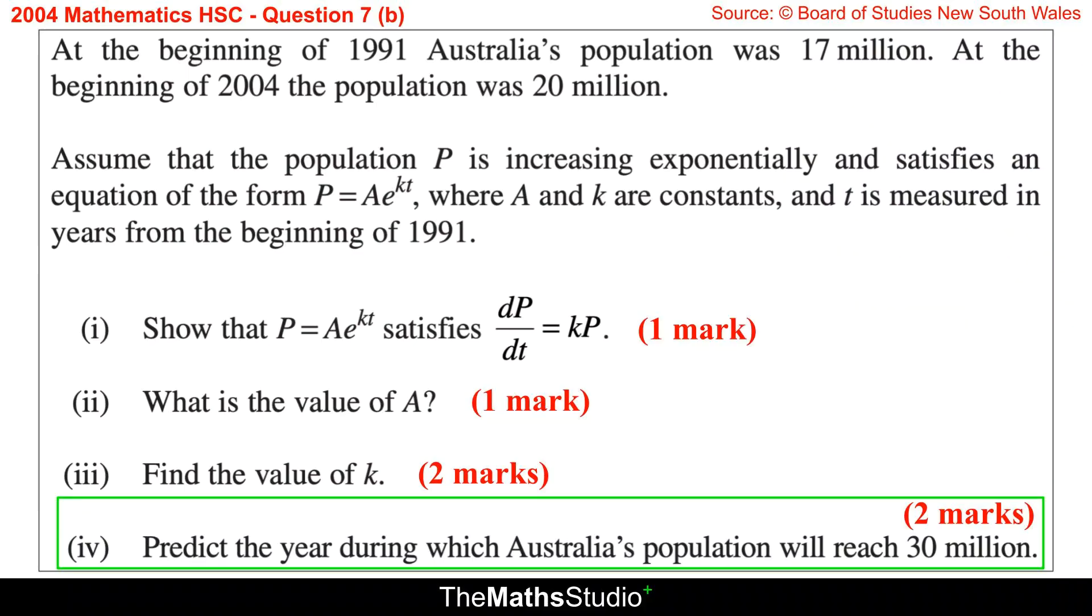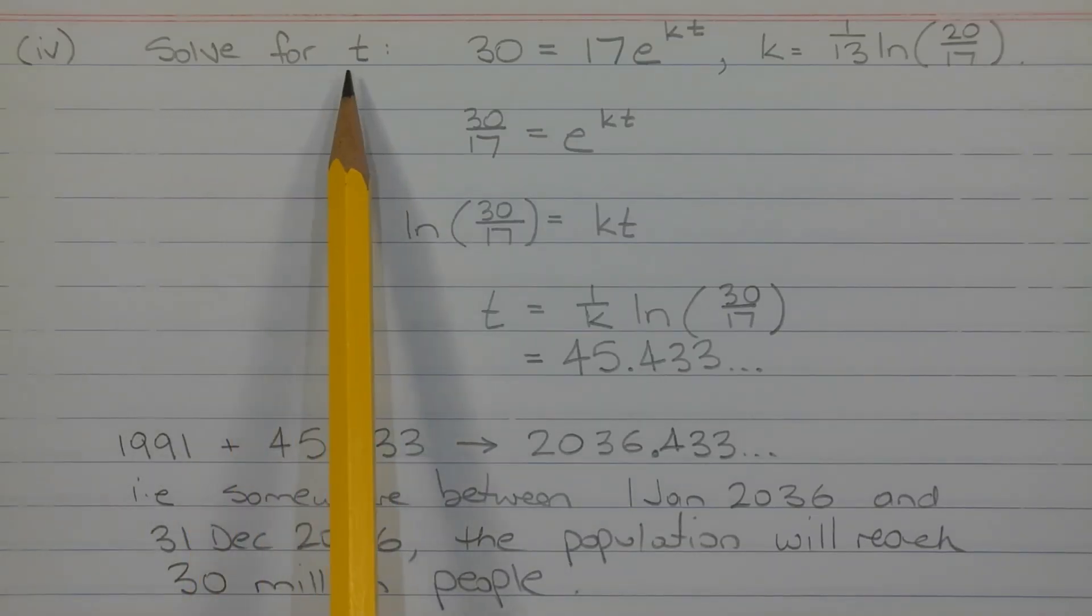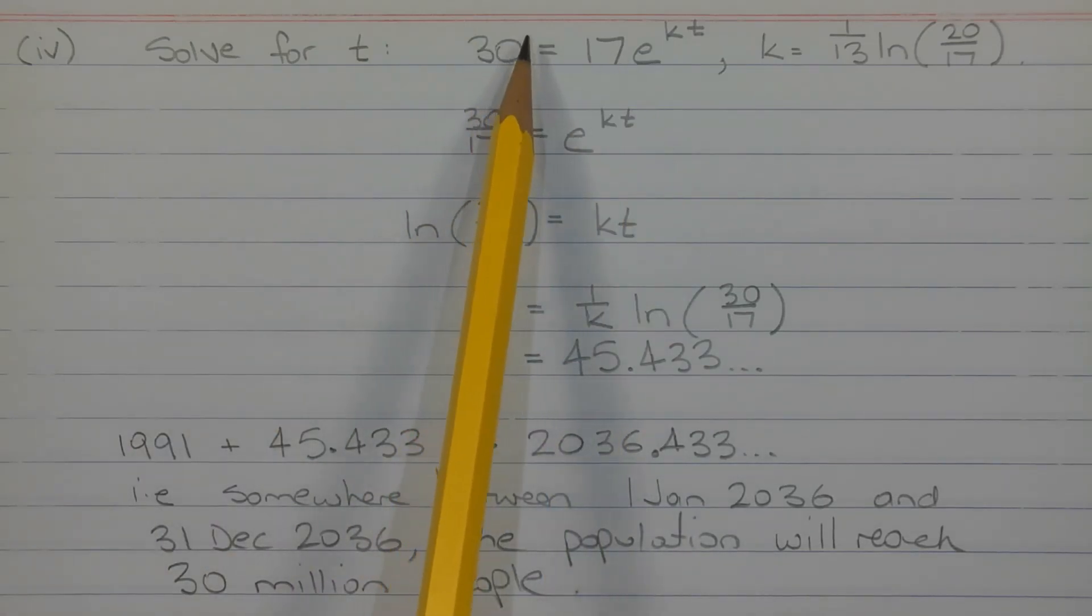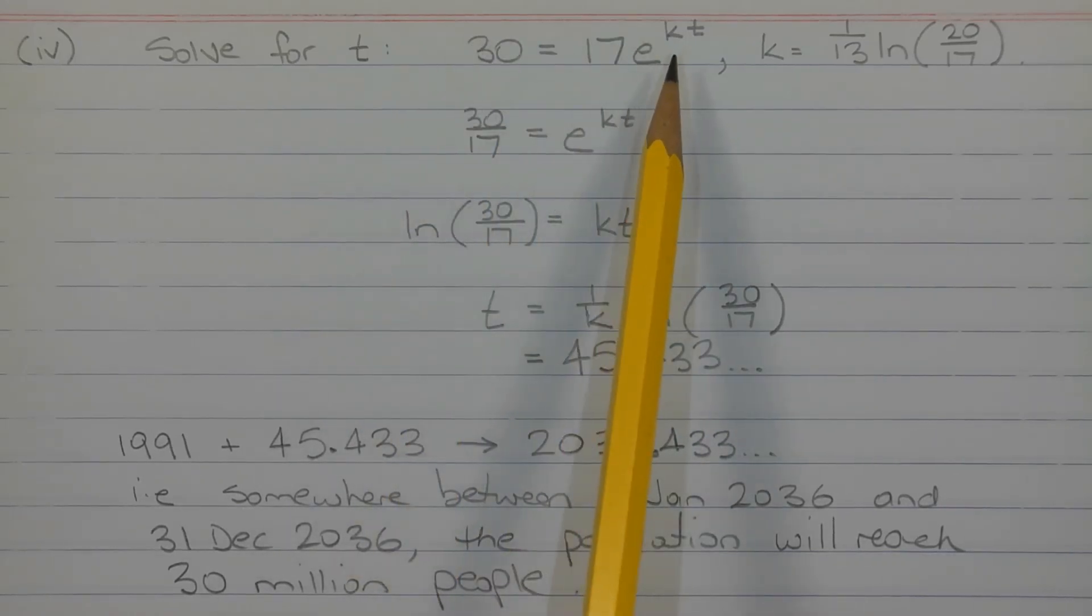Part four. Predict the year during which Australia's population will reach 30 million. Solve for T the equation 30 equals 17 times E to the power of KT, where K is equal to 1 over 13 times LN of 20 over 17, which we found in part three. It's easier to write the equation this way; rather than writing 30 million and 17 million, we can interpret the 30 and the 17 as 30 million and 17 million anyway. It just makes the equation easier to solve.